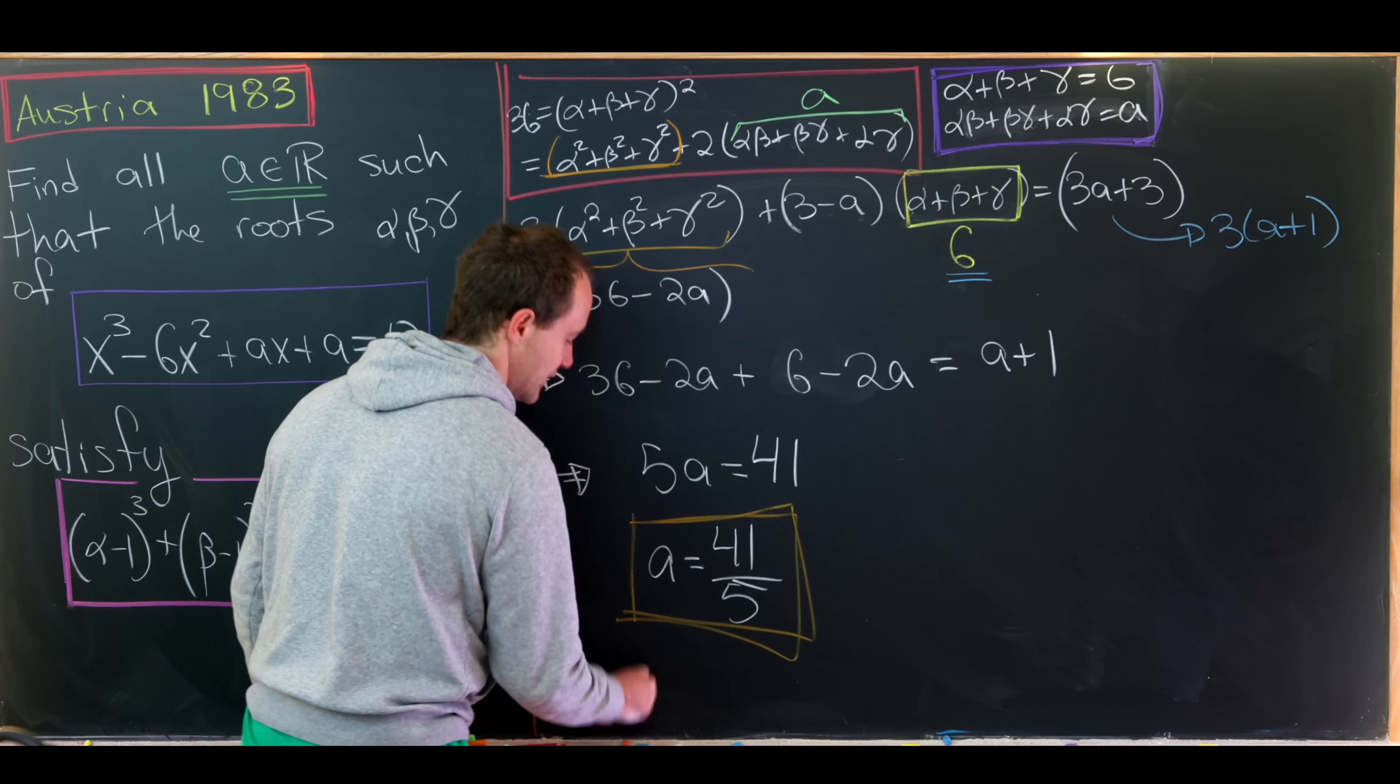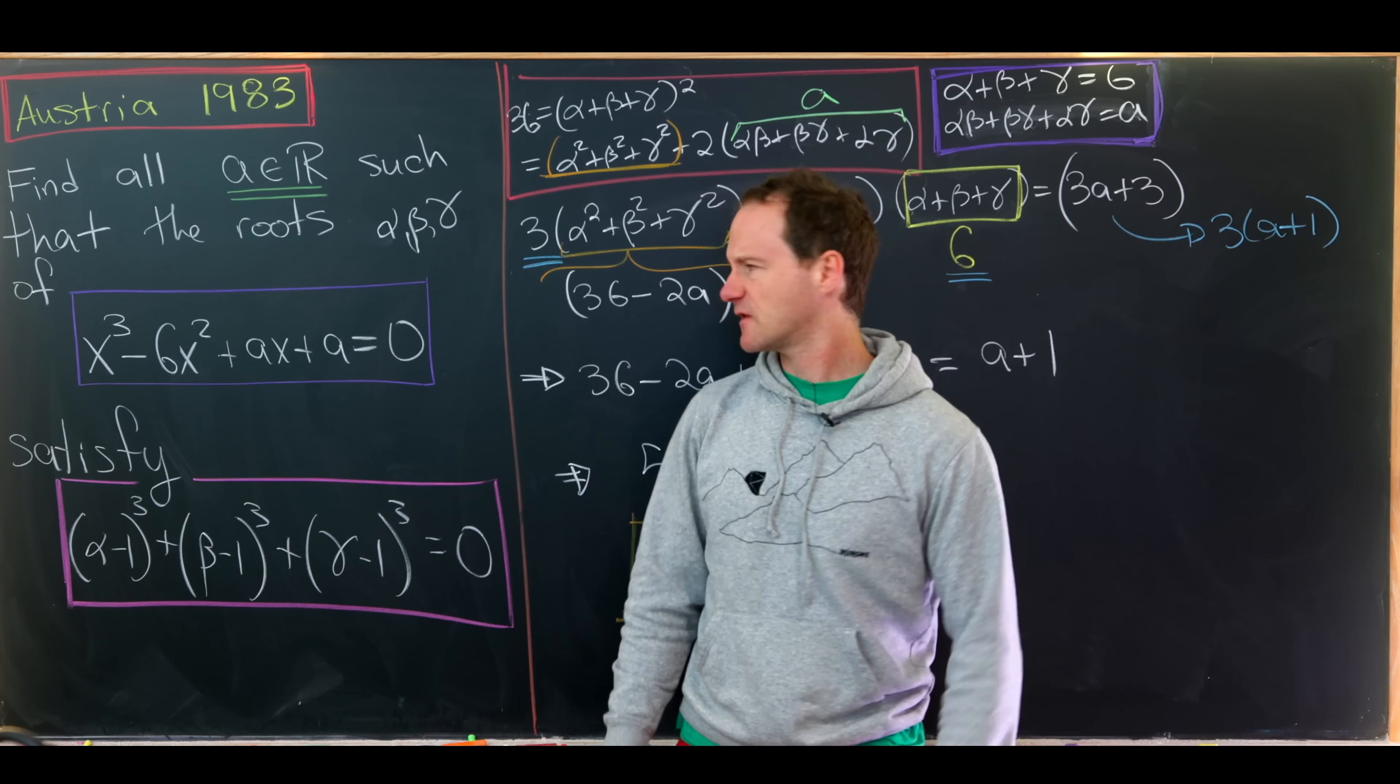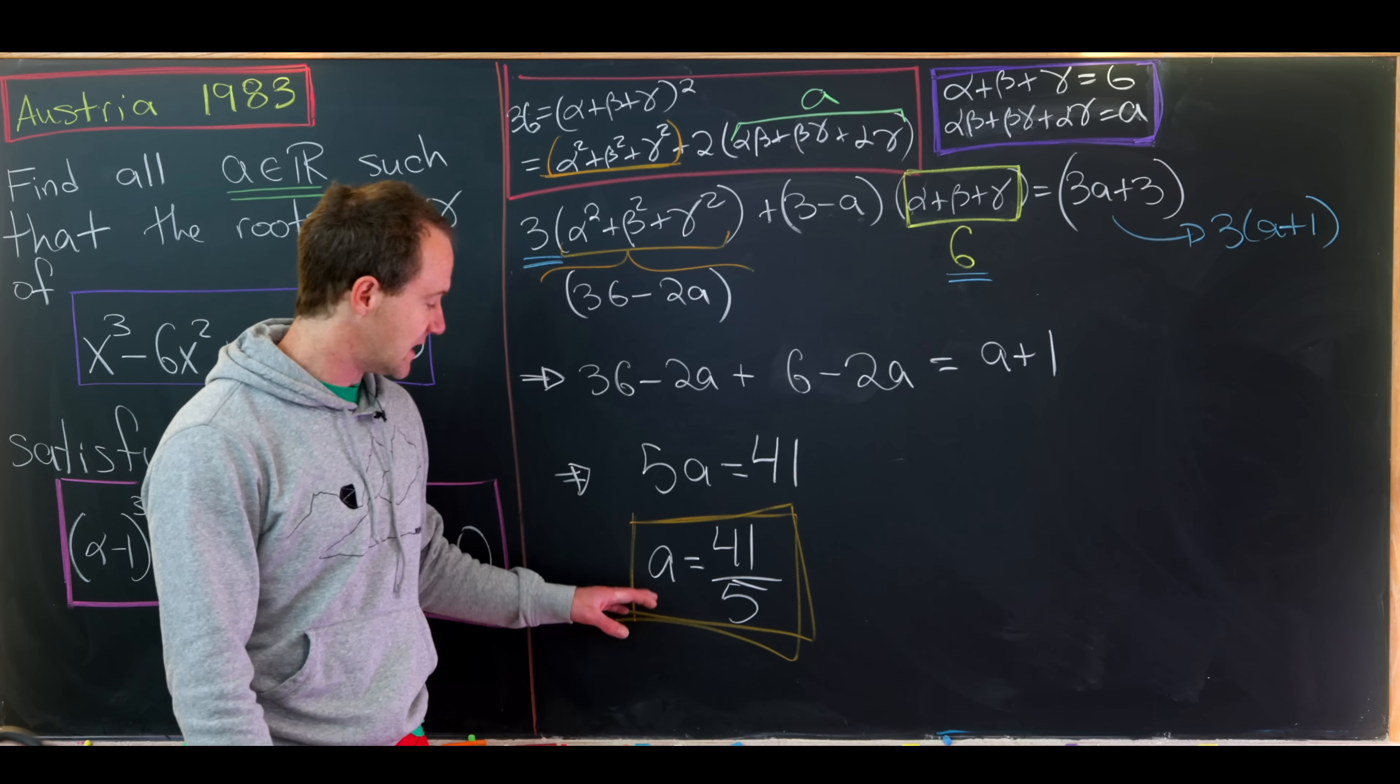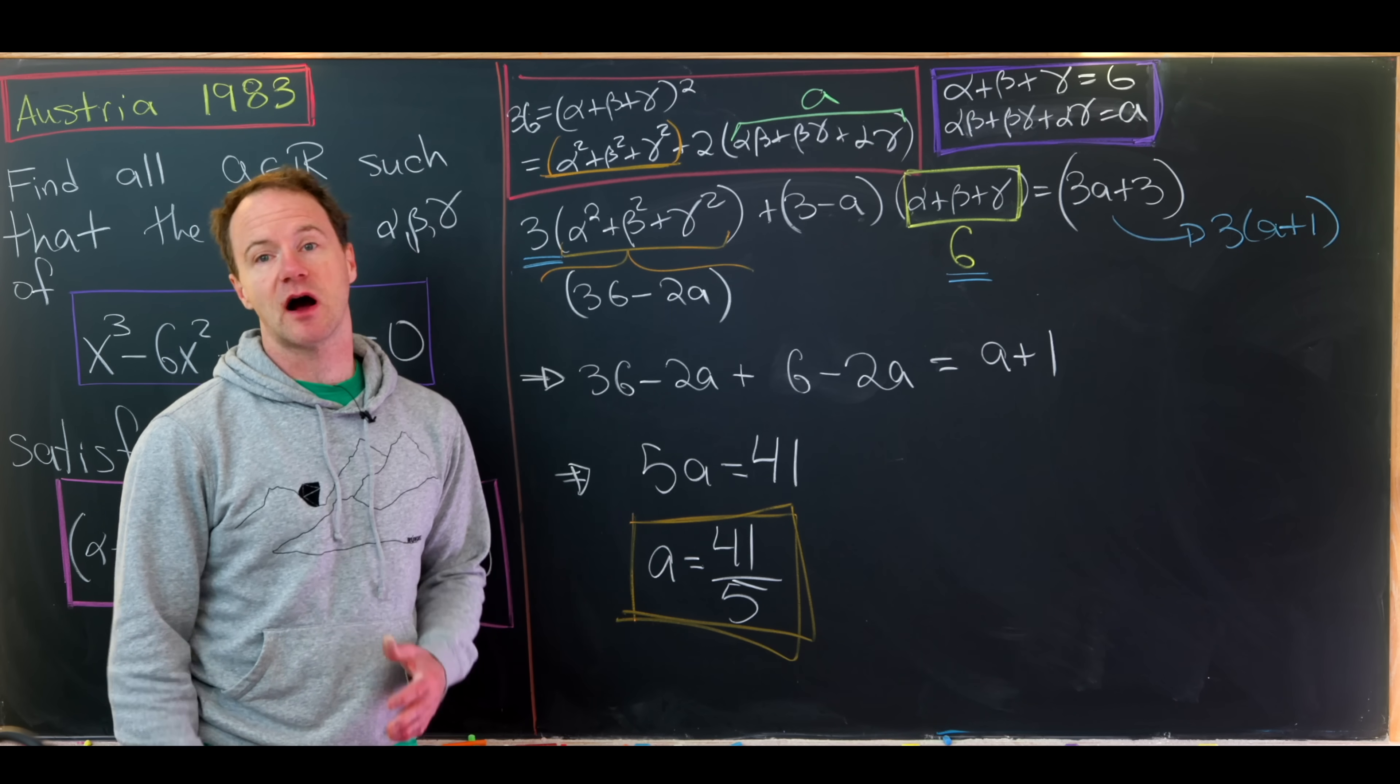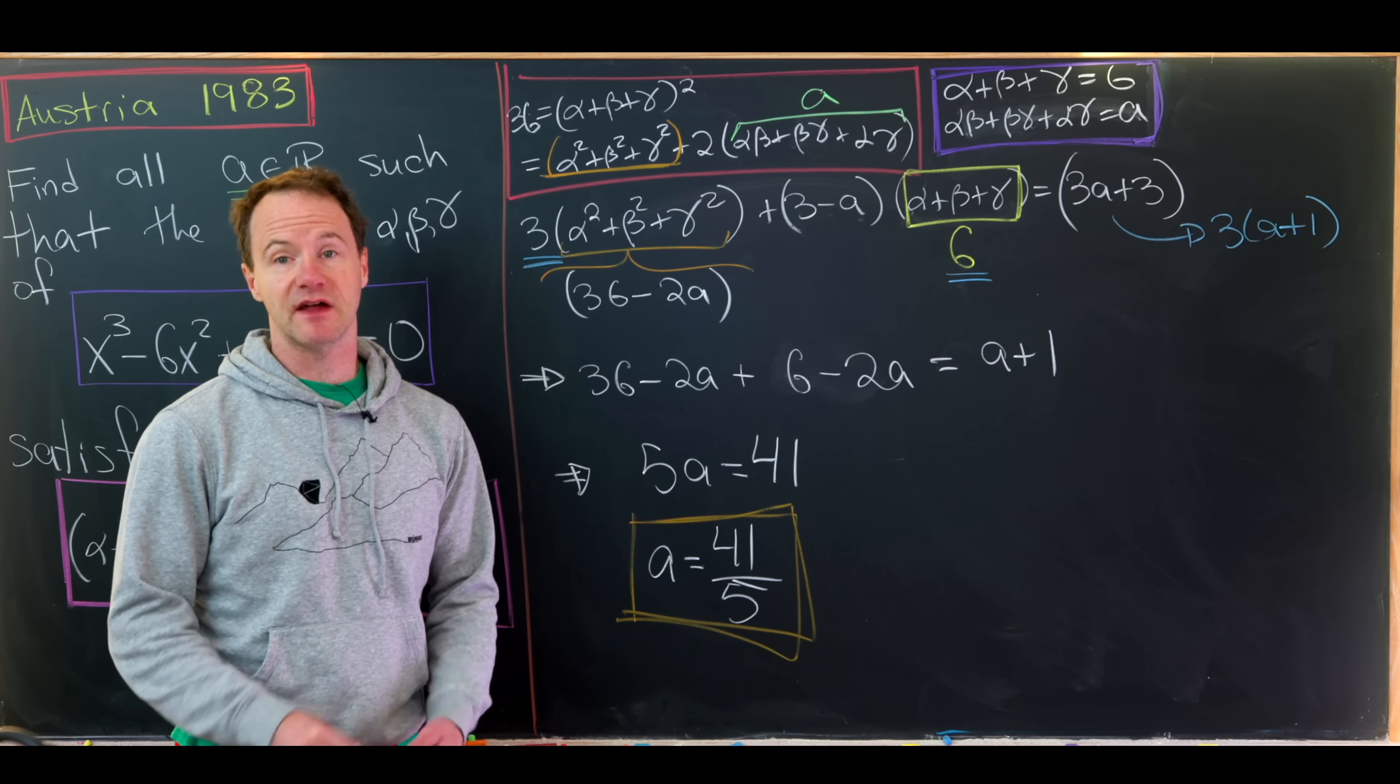So that's the value of a that makes this action happen. Maybe as a follow-up question, what would these roots alpha, beta, and gamma be for this value of a? I will say that they are complex numbers, so it's not really a simple calculation. And that's a good place to stop.